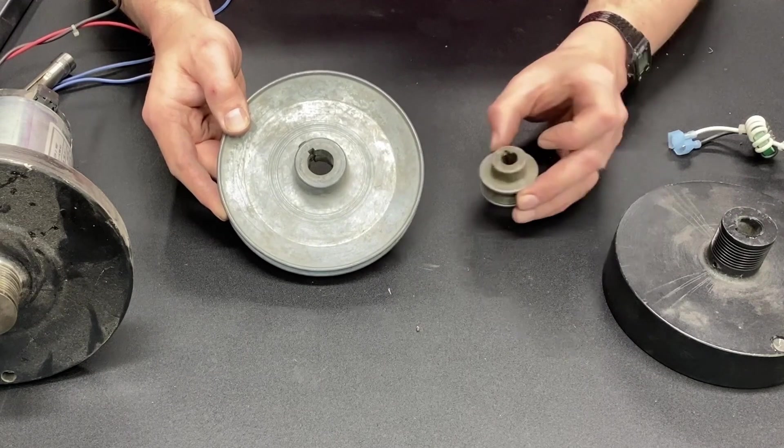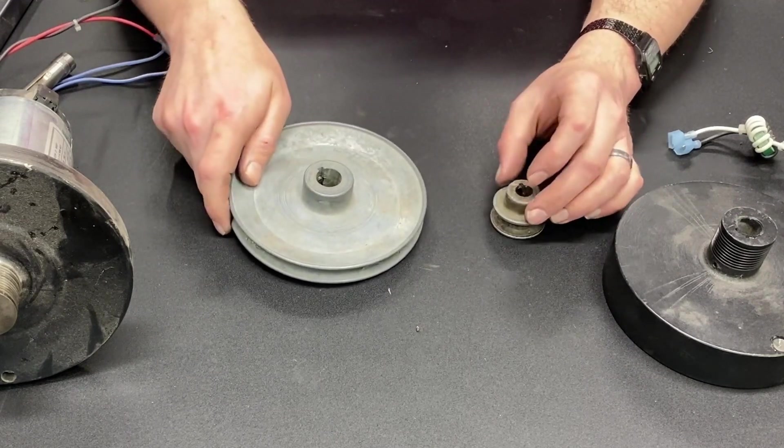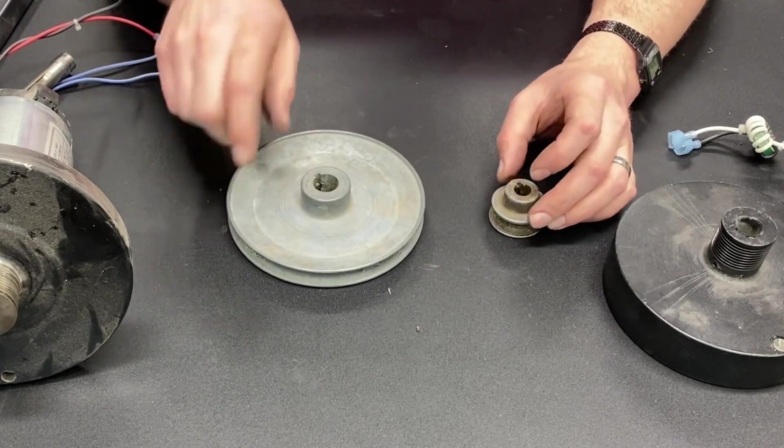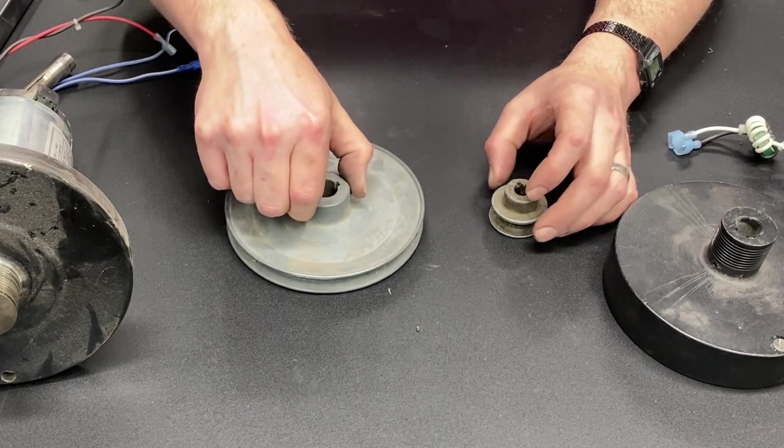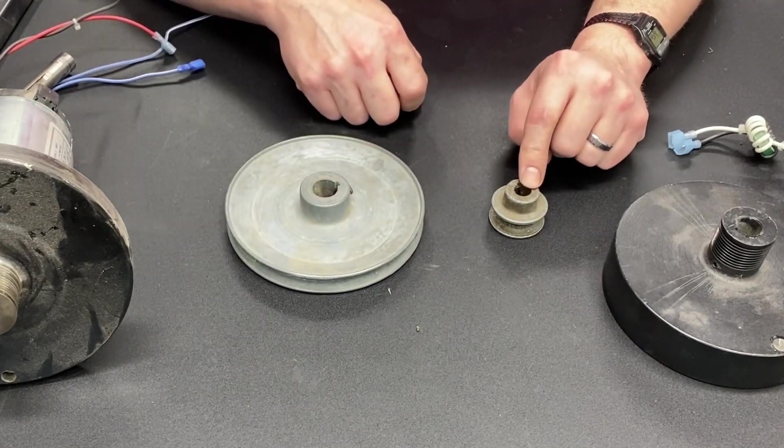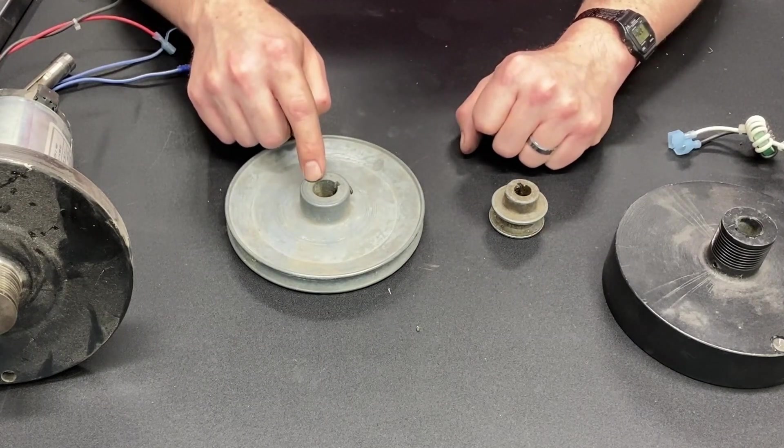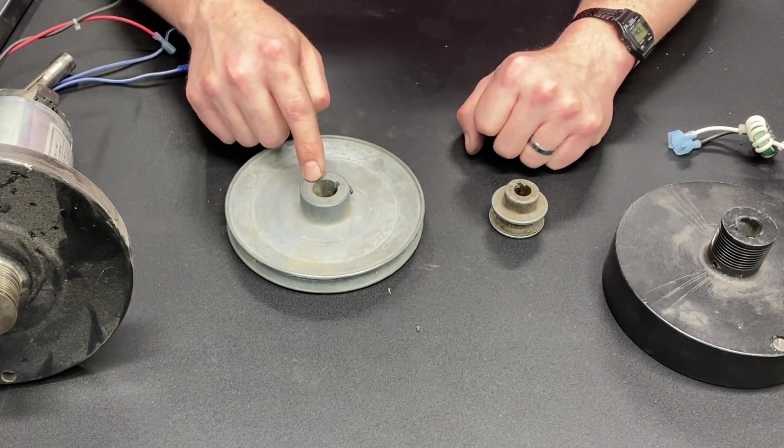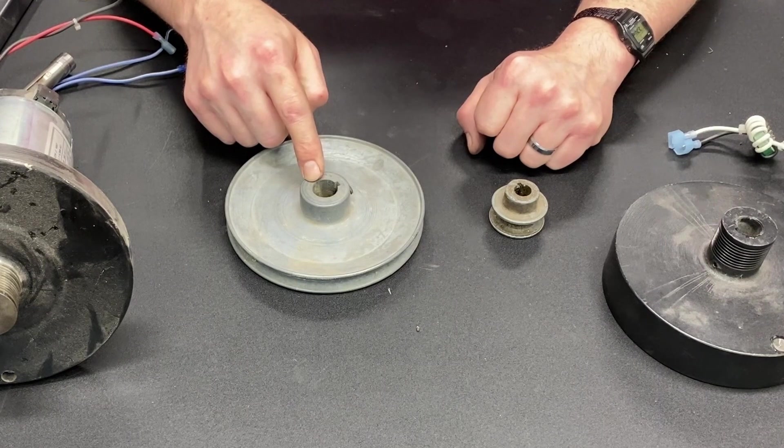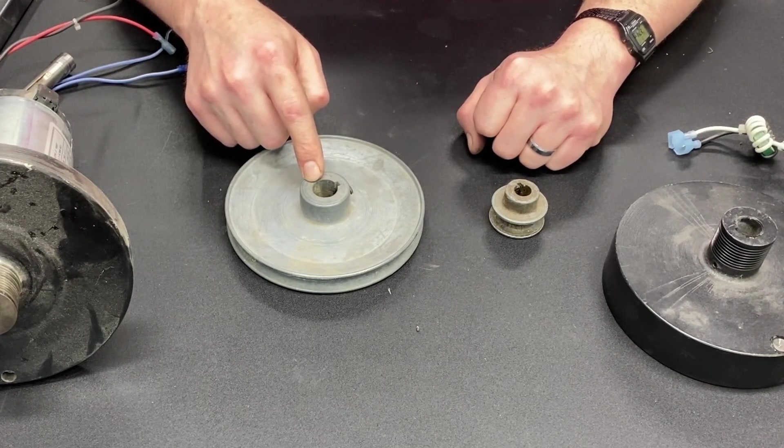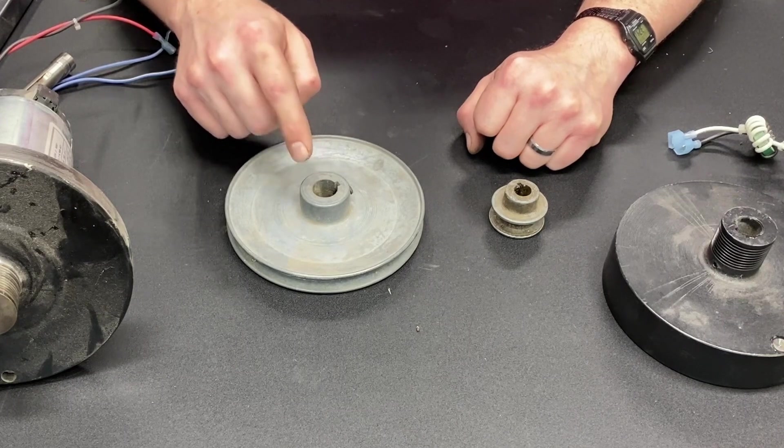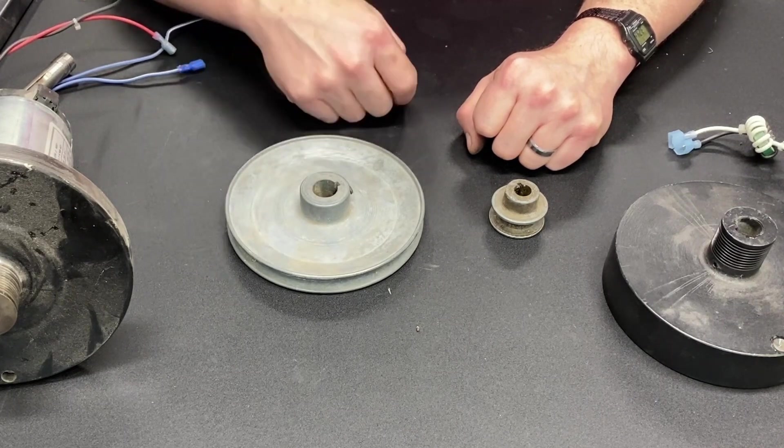What that means is this pulley will spin six times in the time that it takes for this pulley to spin once. So if you mount this to your motor and you mount this to your lathe or your grinder, or whatever it is you're trying to attach a treadmill motor to...